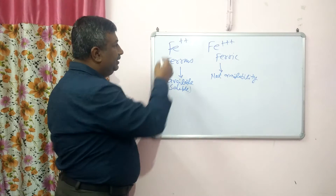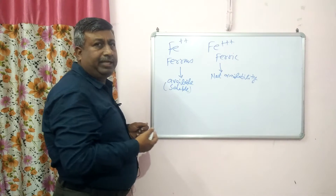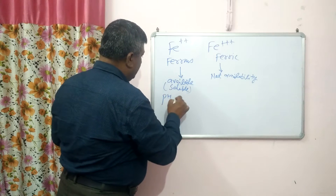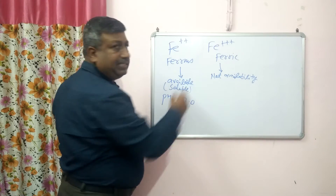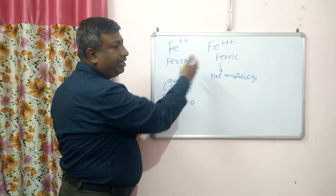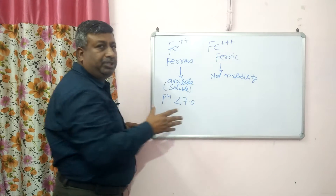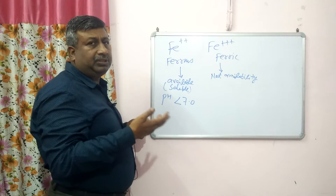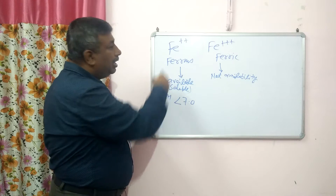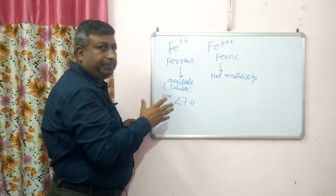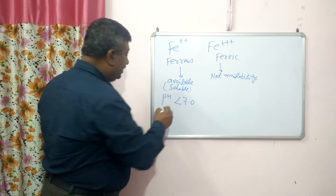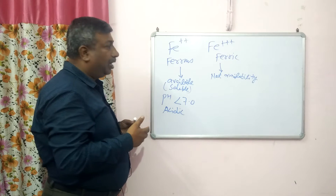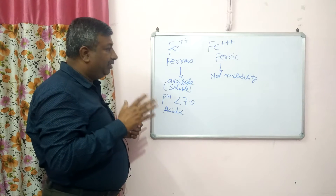If iron is present in the ferrous form, there is more availability. If it is converted into the ferric form, then availability is reduced. When pH is less than 7, both ferrous and ferric species exist in soil solution. Under acidic conditions, these species are available and iron is accessible to the plant. This is the reason that iron is more available under acidic conditions.